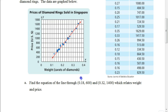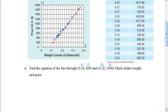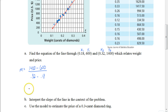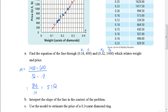We'll use (.18, 600) as x1 and y1, and (.32, 1400) as x2 and y2. To find the slope, we subtract the y-values: 1400 minus 600 gives us 800. Dividing by the carat weights: .32 minus .18 gives us .14. Dividing those out and rounding to the nearest hundredth gives us a slope of approximately 5714.29.